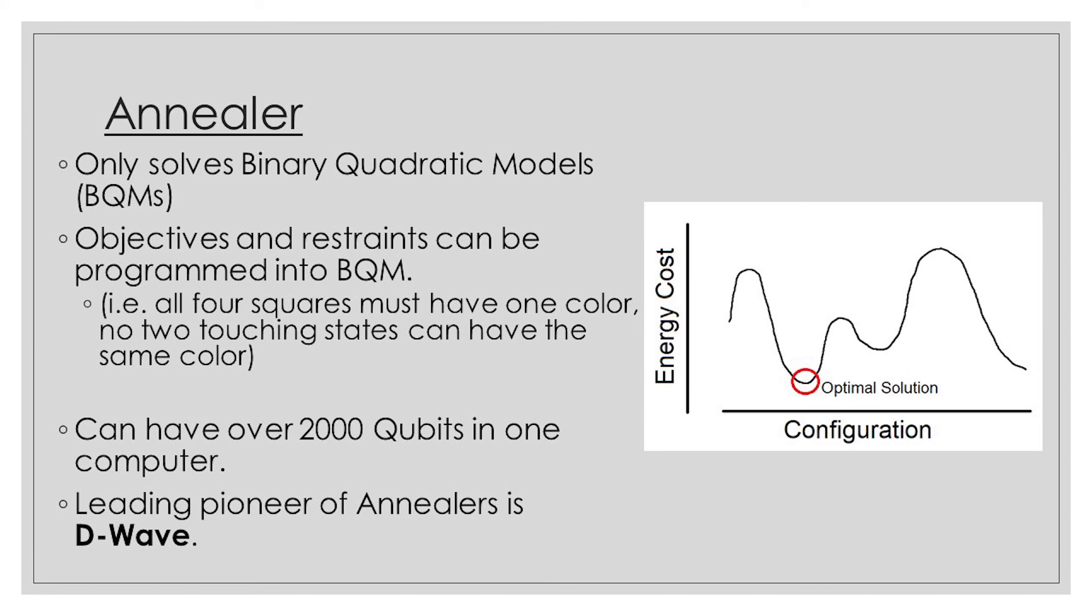Additionally, unlike the gate-based quantum computers, annealers can use over 2,000 qubits at once, a huge improvement over their gate-using counterparts, which only have around 50 or 60 qubits. The company D-Wave has been on the pioneering edge of annealer computation and has posted multiple tutorials on YouTube for people interested in exploring the field of quantum annealers. D-Wave also allows users to test their own BQMs on real quantum computers.